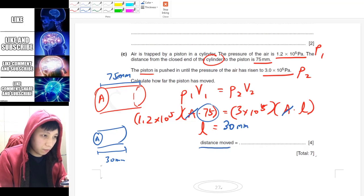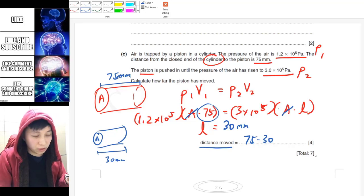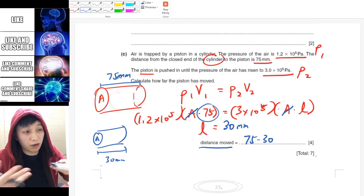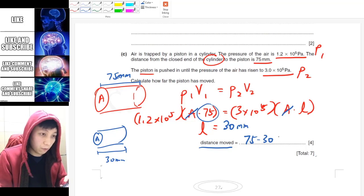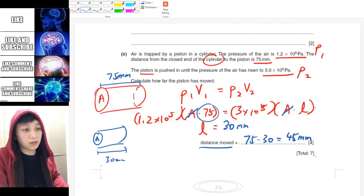So that would be 75 minus 30, because 30 is how much you have at the end. So that will simply be 45 millimeters. So this is the distance that you moved.